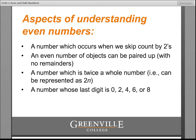An even number of objects can be put into pairs with no leftovers, and an even number is twice a whole number. Now that last one isn't exactly worded as a typical second grader would word it — a number which is twice a whole number, i.e., can be represented as 2n, sounds a little alien for second grade. But in terms of second grade, they're most likely to understand that as an even number is the sum of a doubles fact. So 2 can be renamed as 1 plus 1, 4 as 2 plus 2, and all of the even numbers can be renamed as a doubles fact.